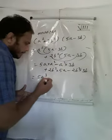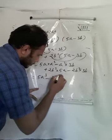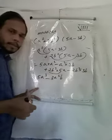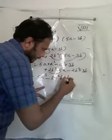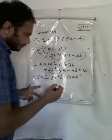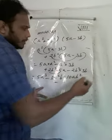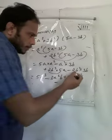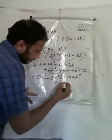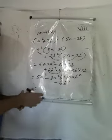So a squared into 5a gives 5a cubed. Minus a squared into 3b gives 3a squared b. Then 2 into 5 gives 10, so 2b squared into 5a gives 10ab squared. Minus 2b squared into 3b: 2 times 3 is 6, giving 6b cubed.